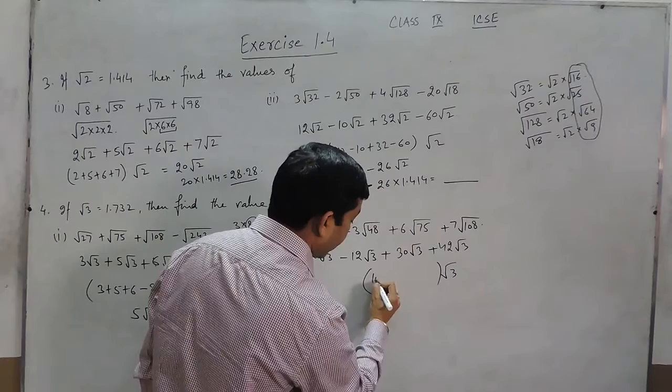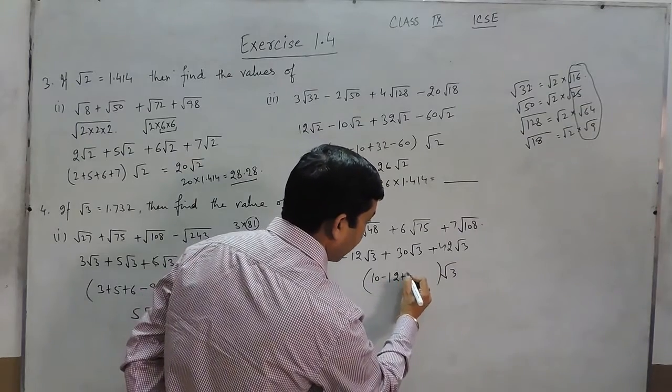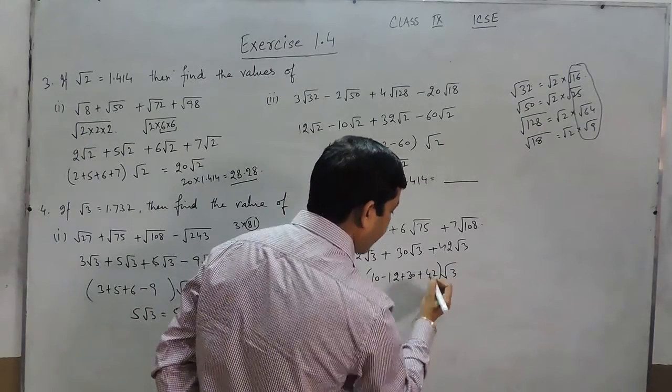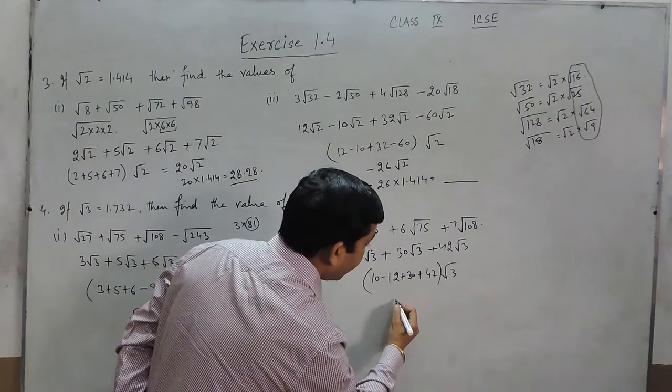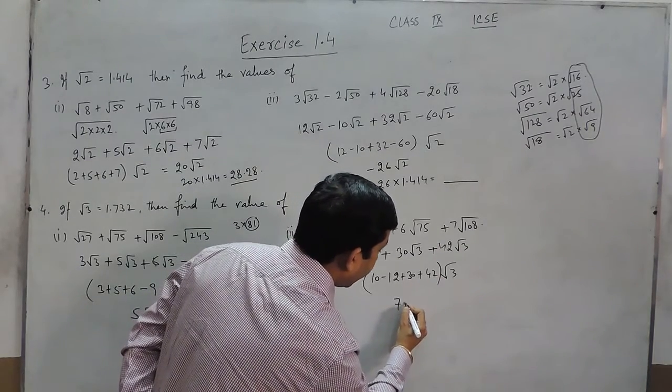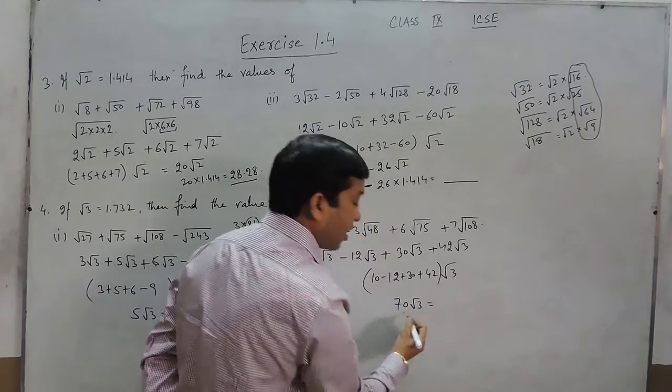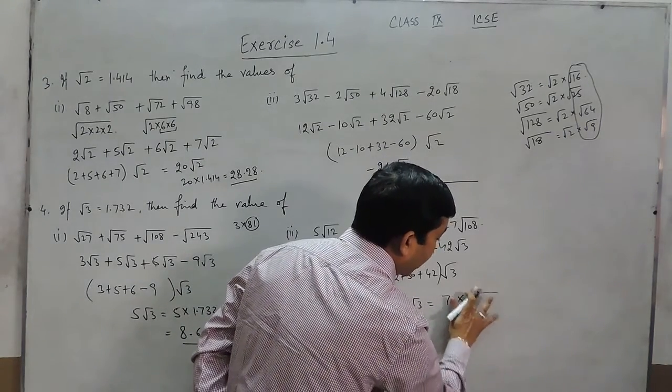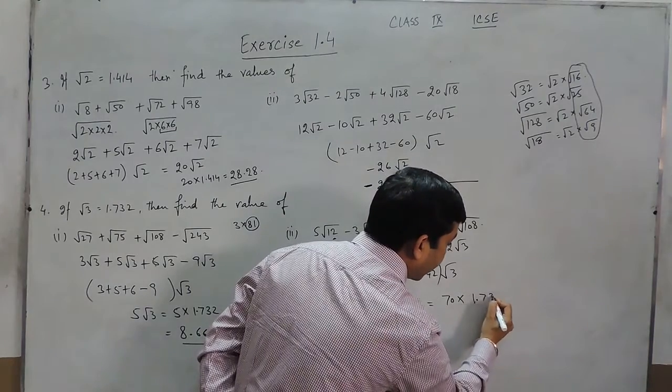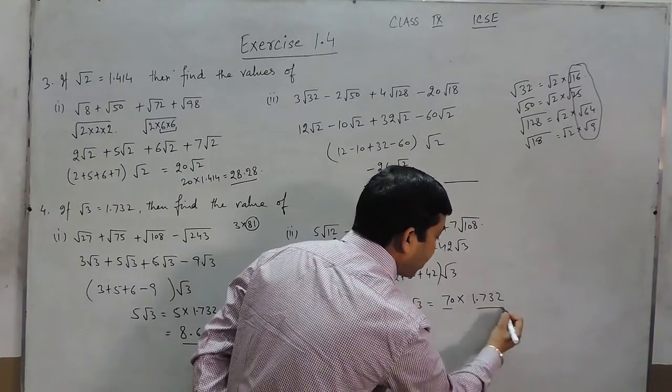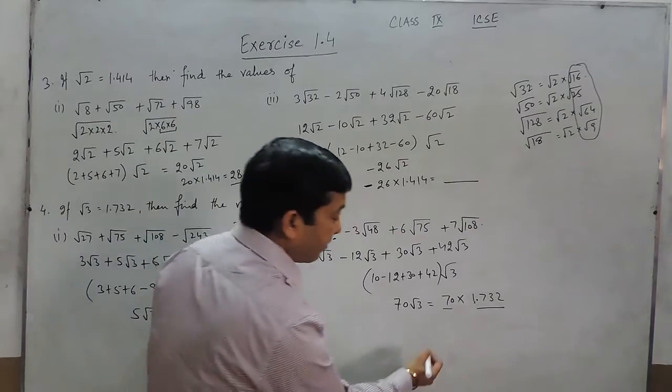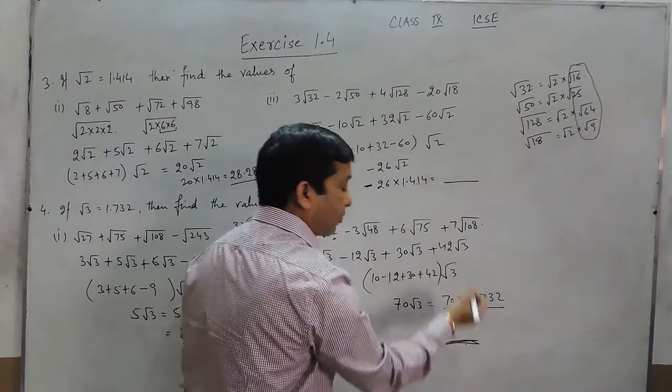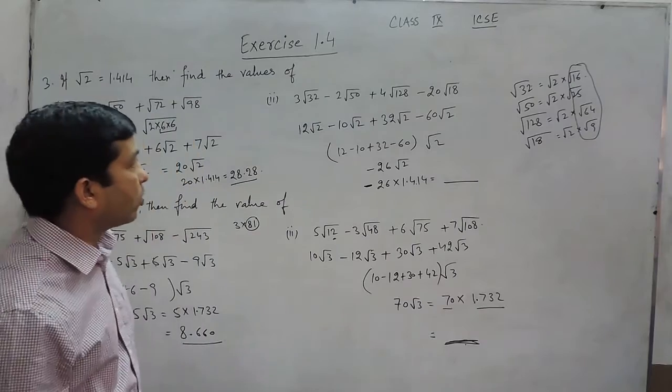Again √3 is taken as common. So this is 10 - 12 + 30 + 42. If we add them up it comes out to be 70√3. Where we know that the value of √3 is 1.732, so 1.732 we multiply by 70 and we get the answer. These are the parts of calculation which you can do on your own.